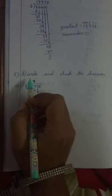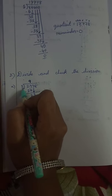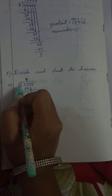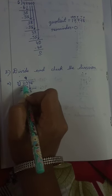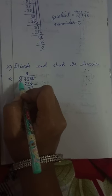Here in the second problem, divide and check the division. Here 3 is the divisor and 2938 is divided. What is the first number in the thousands place? 2. 2 is less than 3.